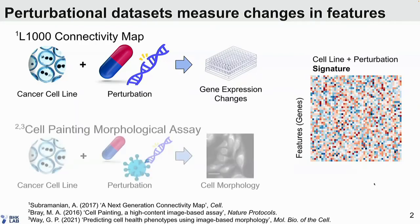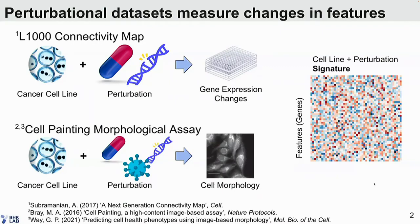Another example of a perturbational data set is the cell painting morphological assay, which is also from the Broad, which similarly measures changes due to perturbation by compounds and genetic reagents. But the feature space is morphological features, so imaging of cells after treatment. These data sets can be thought of as matrices, where the rows are your features and the columns are signatures of the changes induced by perturbation.